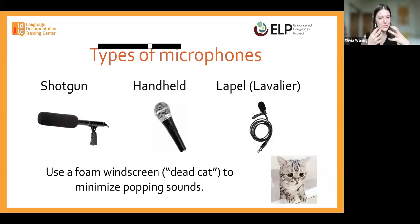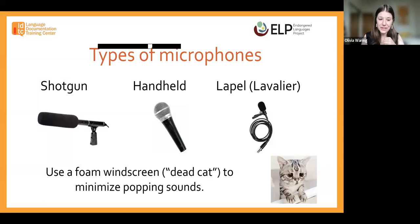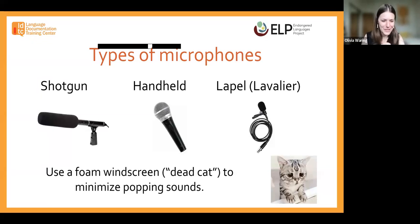As you're speaking, the P's and T's and other plosive sounds will create a popping effect in the recording, and you want to minimize that. The way to do that is to use a foam windscreen, which has unfortunately acquired the name 'dead cat' in the audio recording industry. That will be very helpful for you in minimizing those unpleasant popping sounds. You can see one of those foam windscreens right here on that shotgun mic.